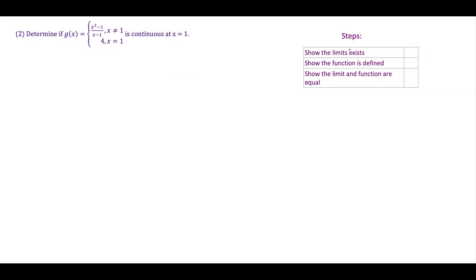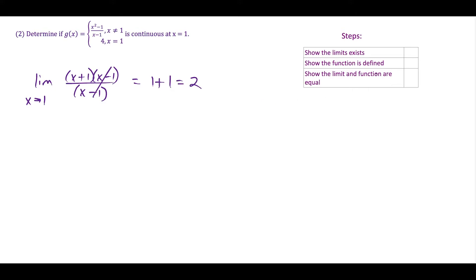For the next example, we start the same way — we want to show that the limit exists. This time, we want to see if g of x is continuous at x equals 1. Taking the limit as x approaches 1 of g of x, we factor the quadratic as x plus 1 times x minus 1, with x minus 1 on the bottom. These cancel out, leaving x plus 1. Plugging in x equals 1, we get 1 plus 1 equals 2, so the limit does exist. But notice the function value g of 1 equals 4. This function is not continuous at x equals 1 because the limit and the function value are not equal — that last step is not satisfied.